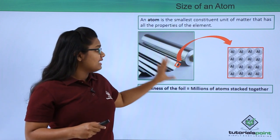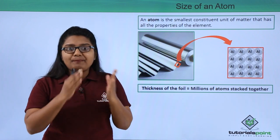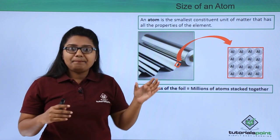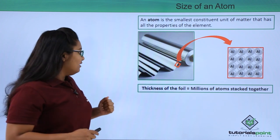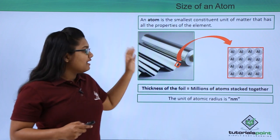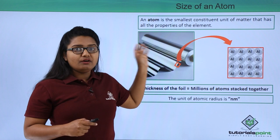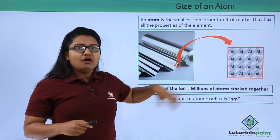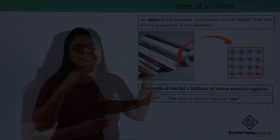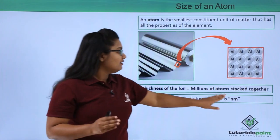To measure the size of such small particles or extremely small atoms, we have separate units like a nanometer. We measure anything related to the length of atoms or the size of atoms or atomic radius—everything is measured in terms of nanometers.